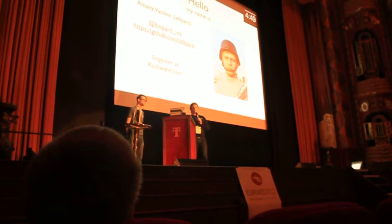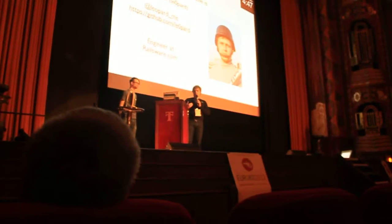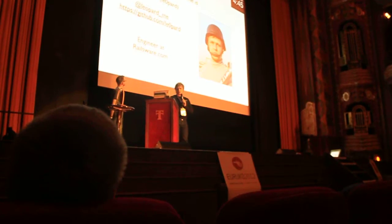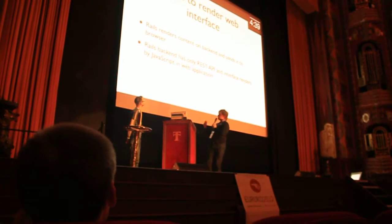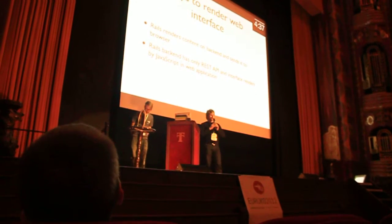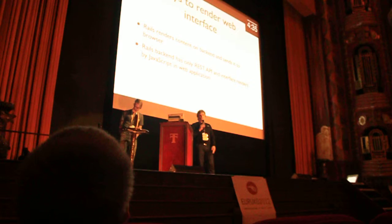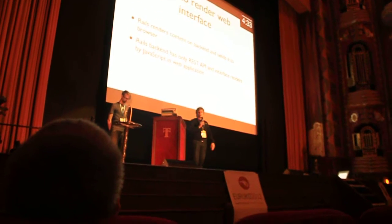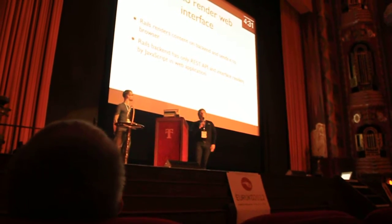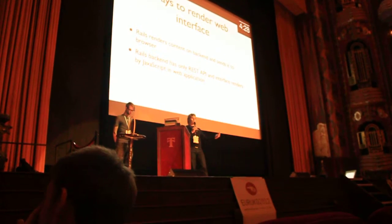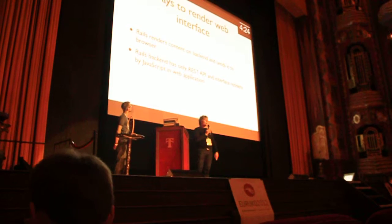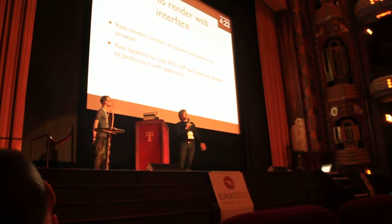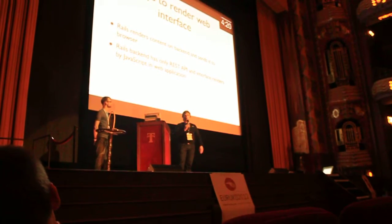I'm an engineer at Railsware. In our company we have a little problem when developing. There exist two ways to render an interface in a Rails application. First, you render content on the backend by the server and send it to the browser. The second is more interesting: your backend has only an API and all the interface is rendered by JavaScript.